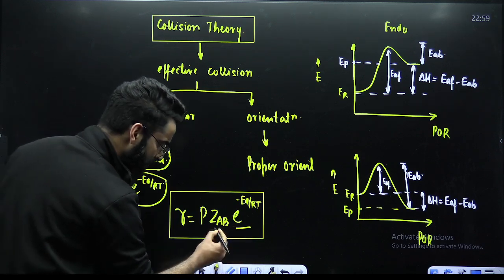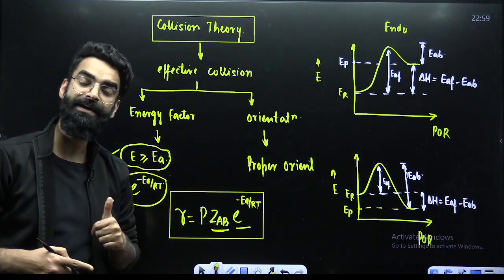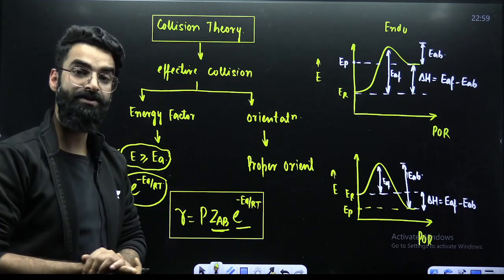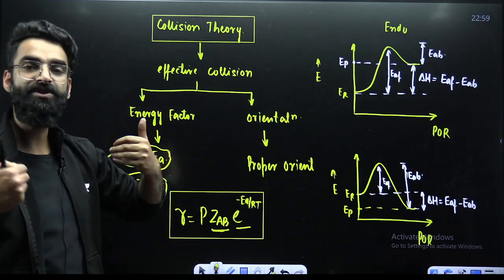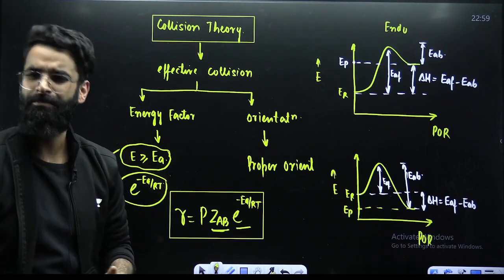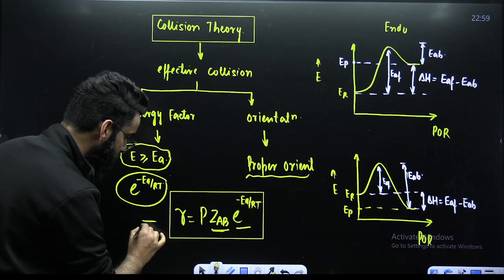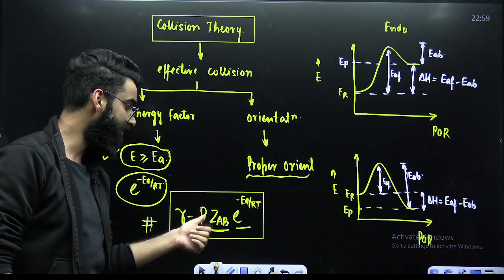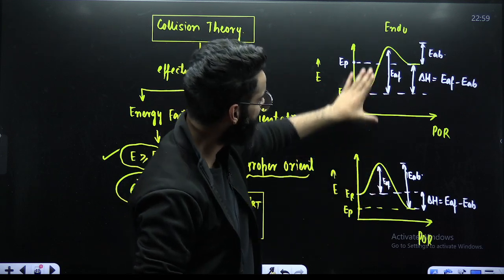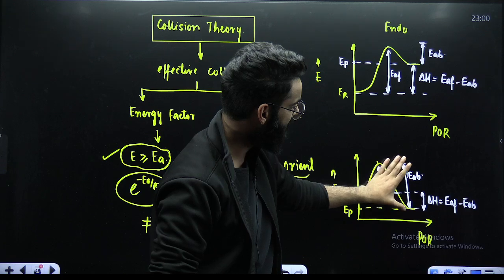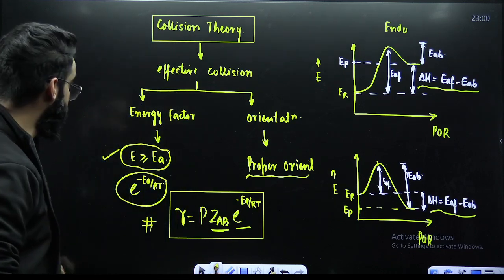As per the orientation factor, reacting species must collide in proper orientation such that steric hindrance is minimized. The rate equation from collision theory includes the orientation factor, collision frequency ZAB, and the Boltzmann factor. There are two energy profile graphs — one for an endothermic reaction and one for an exothermic reaction — showing activation energy of forward and backward reactions. The relation is: delta H equals E_AF minus E_AB, that is activation energy of forward minus activation energy of backward.